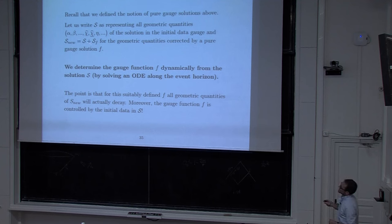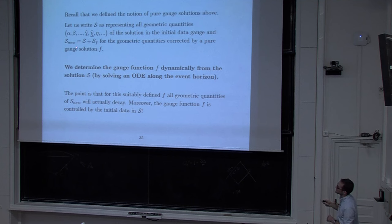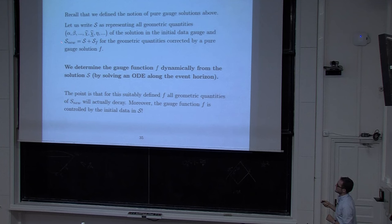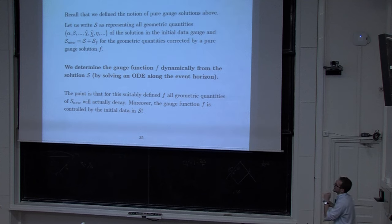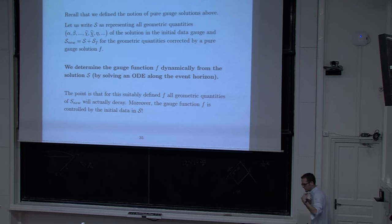The theorem you obtain: consider a solution to the system of gravitational perturbations. What you control a priori from initial data is the flux of chi-hat squared along the event horizon and the weighted flux of chi-bar-hat squared along null infinity. I'll stop here. Thank you very much.